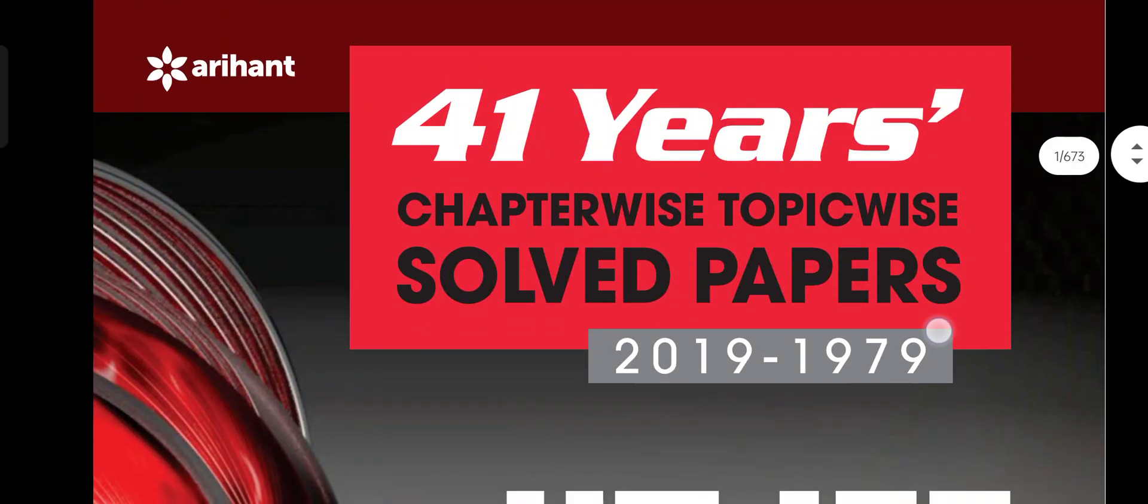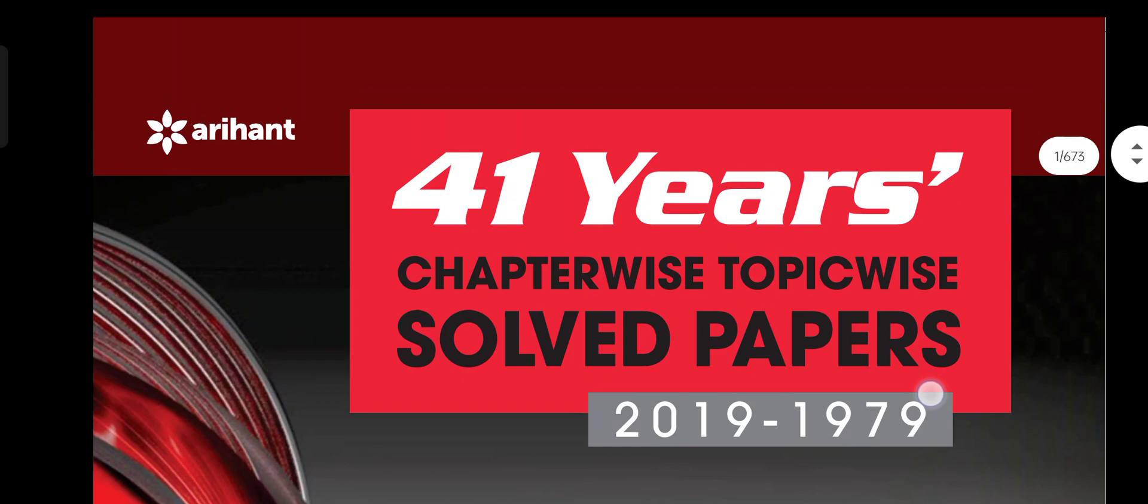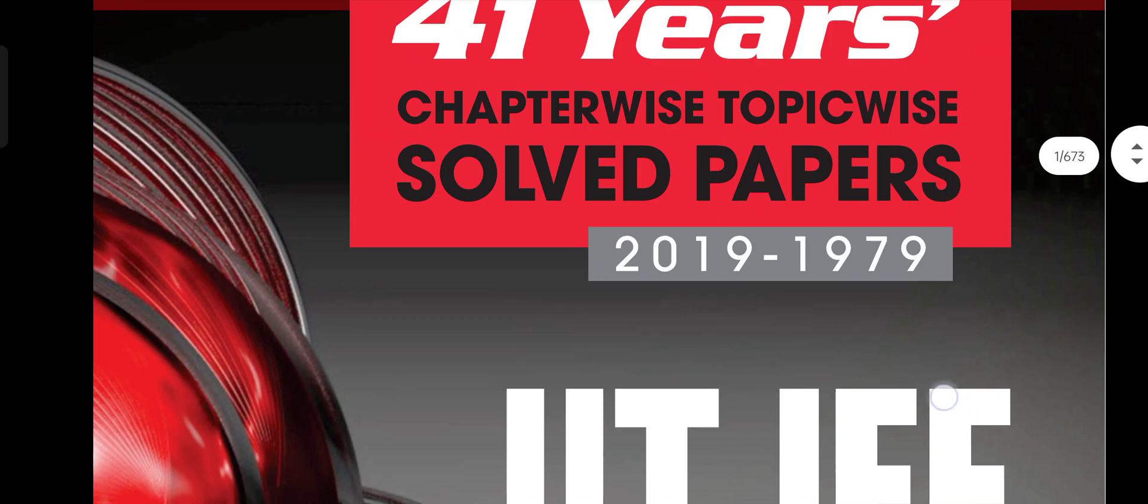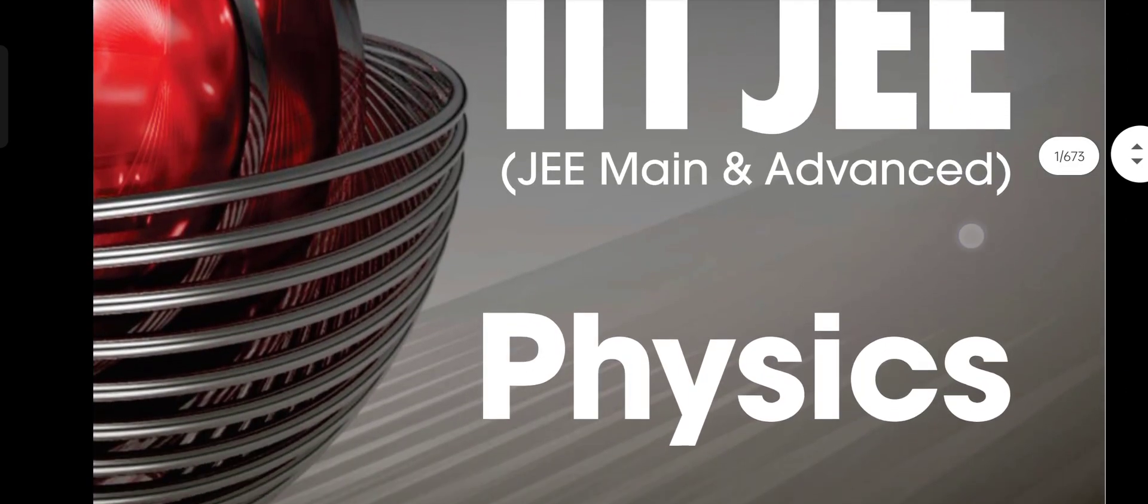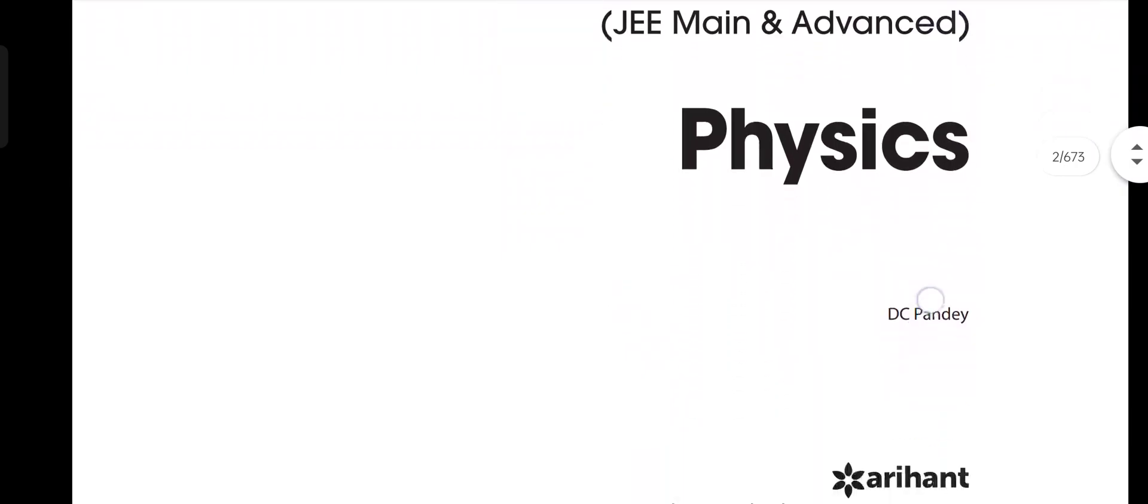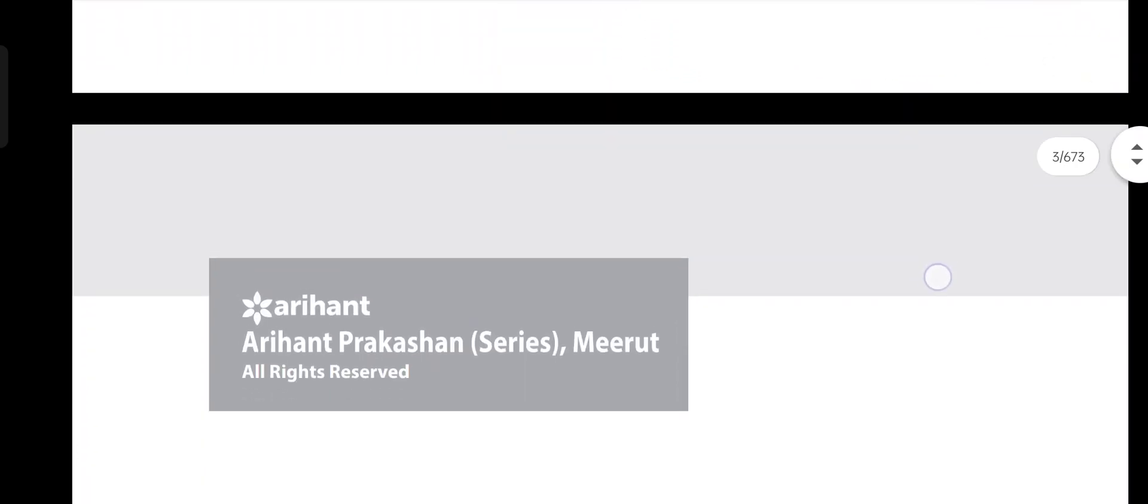Hello everyone and welcome to our channel Science Wale. Today I will be providing you with the PDF of Arihant 41 Years Chapter-wise Topic-wise Solved Papers from the year 1979 to 2019. As you can see, this PDF contains 673 pages because it contains all the questions as well as the solutions.